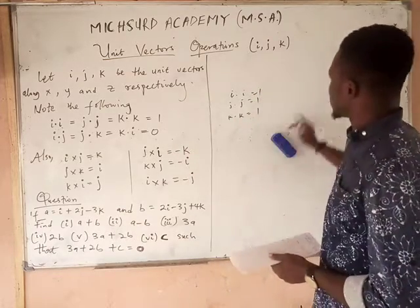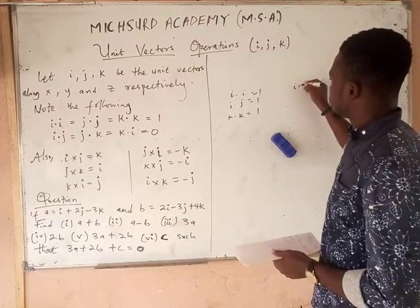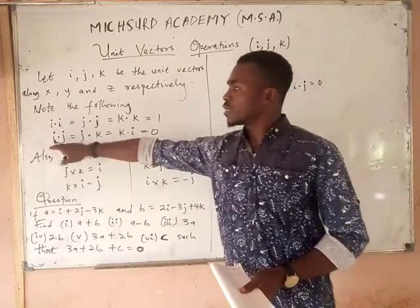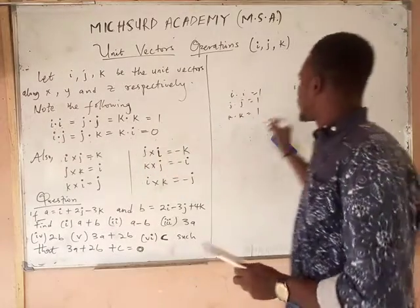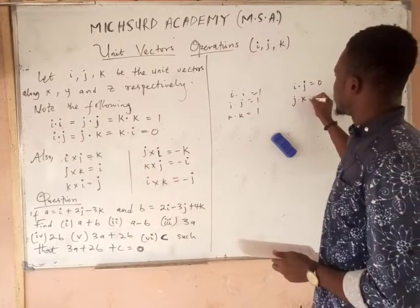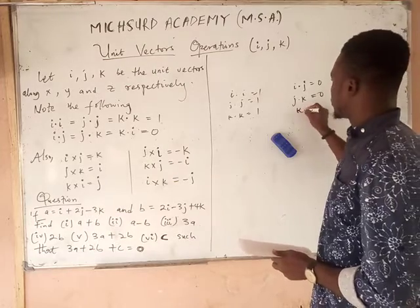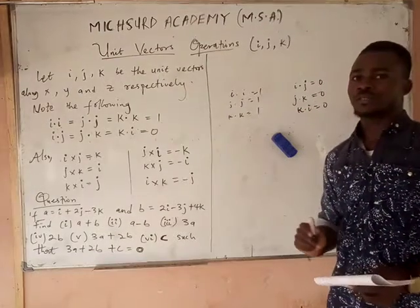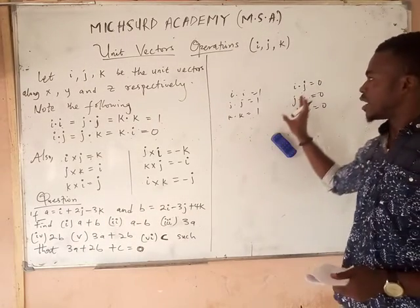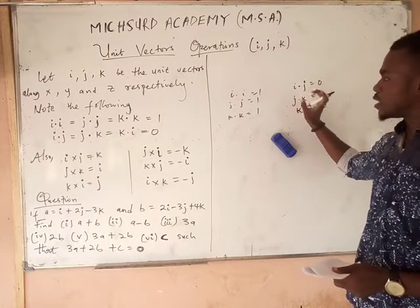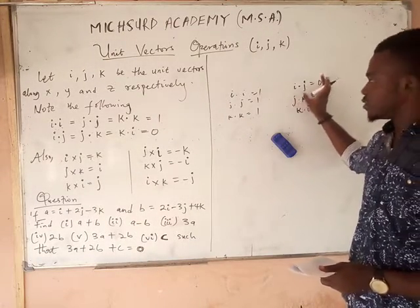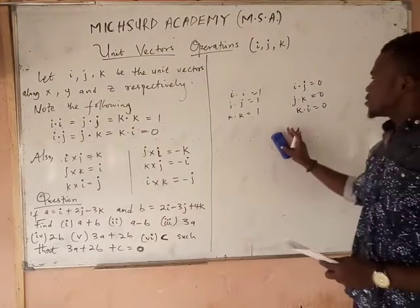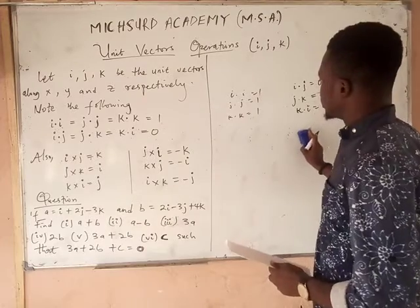But when we do something like i dot j, it will be equal to 0, because they are different vectors. They are different vectors that are orthogonal to each other, so it becomes 0.